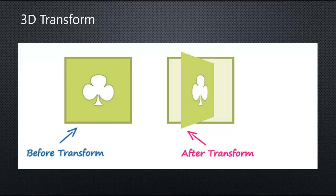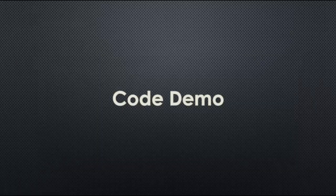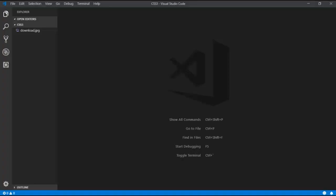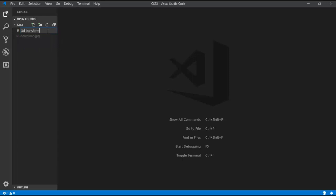This is the output for our transform property. Before the transformation, the image looks like a normal image. After the transformation, the image will be turning. Let's go to the code demo. I am opening my Visual Studio Code and creating an HTML file named 3D-transform.html.